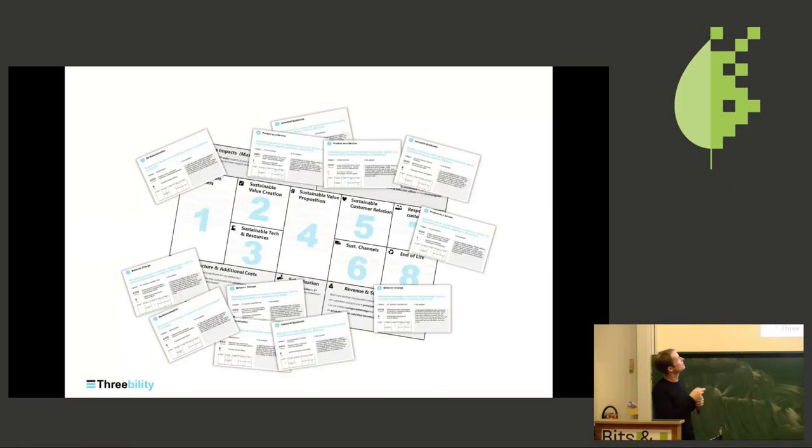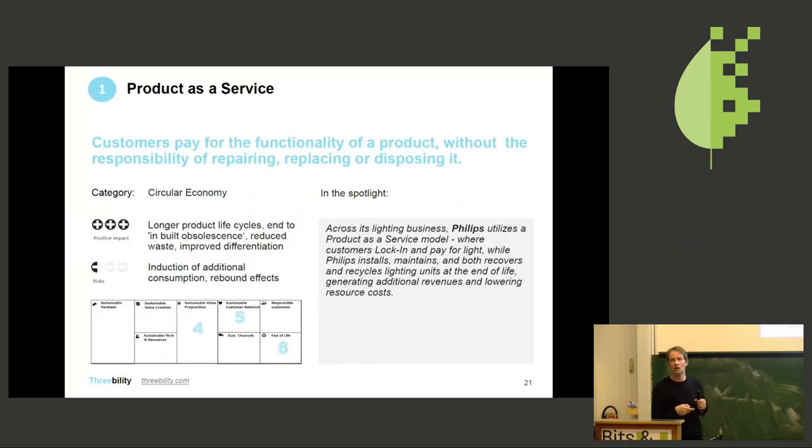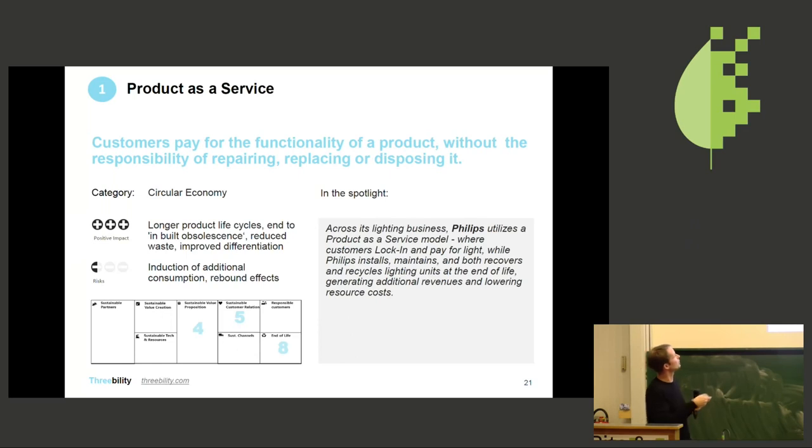So we developed the sustainable business model innovation game which is based around 40 cue cards. Each cue card shows you a particular sustainable business model. This one is the product as a service model. I used to work with Rolls-Royce when I was much younger. They developed the power-per-hour concept so you don't sell a product anymore, you just sell what the person really needs. So rather than selling a washing machine, you sell a wash. For each of these business models it shows you the positive impact and the potential risks. It gives you an example of a company that has successfully implemented this model and it shows you where in the sustainable business model canvas this can be used.